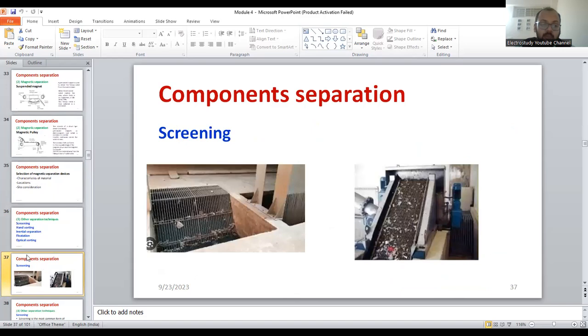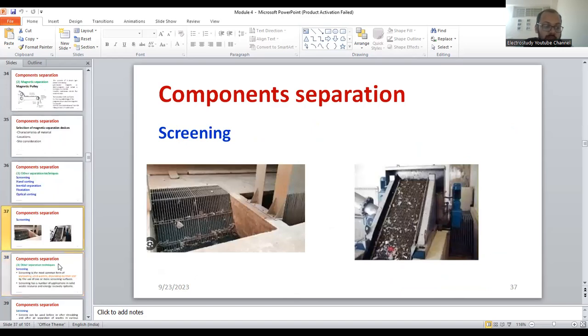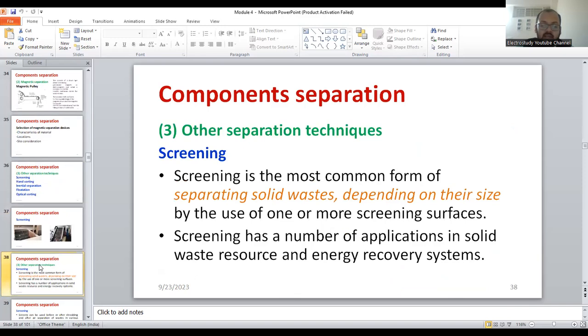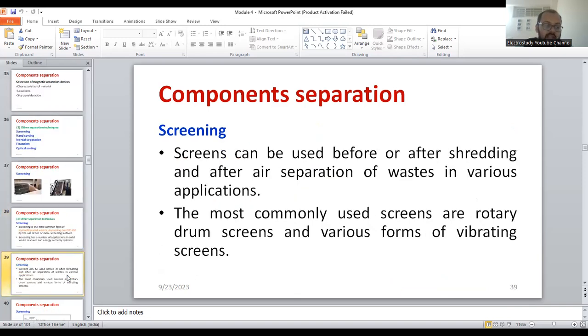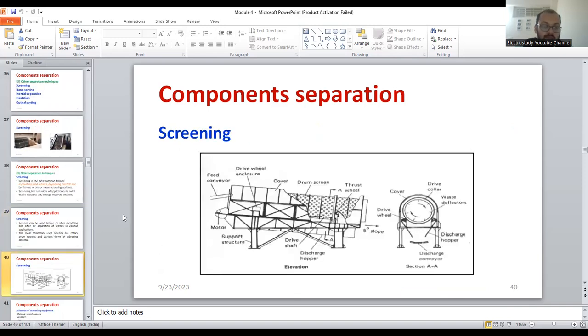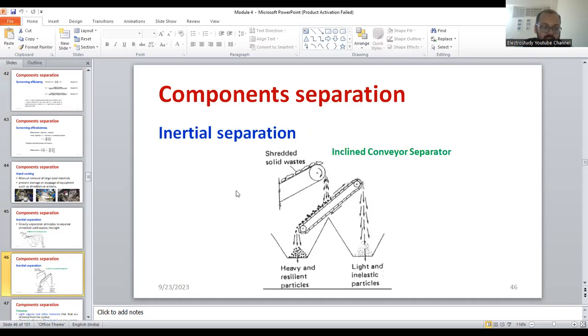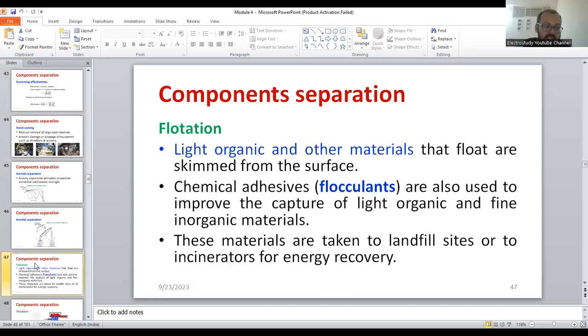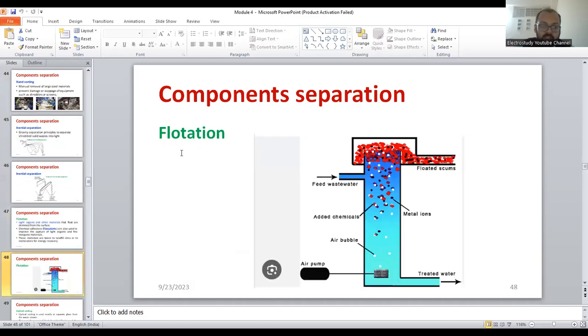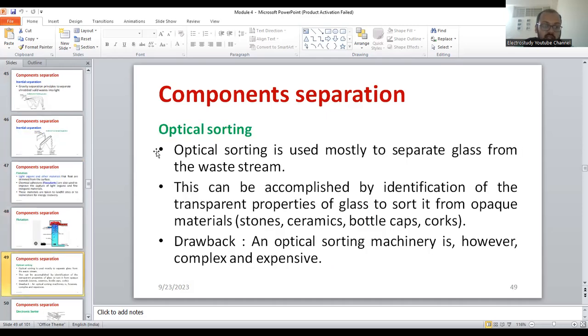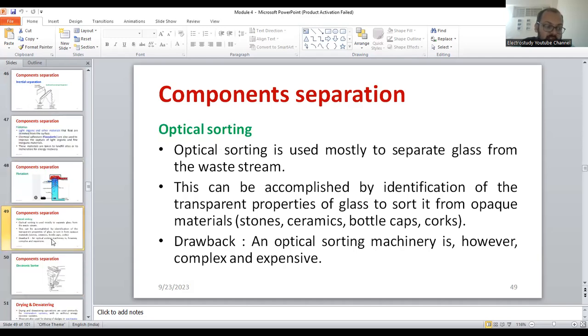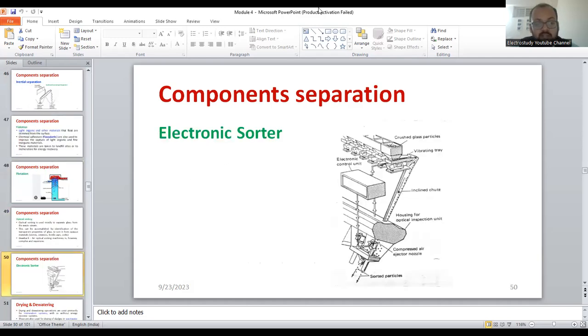Screening: you can observe how the screening process will be. A membrane will be there, a screening device will be there. Another one is called inertial separation. Use the inertial force. Another one is called flotation. You can use some kind of material called the flocculants. I request you to underline the technical terms for the university examination. Flotation also you can use it. Similarly, optical sorting: optical means based on the light understanding. These are the different types of methods. Similarly, electronic sorting is also available.